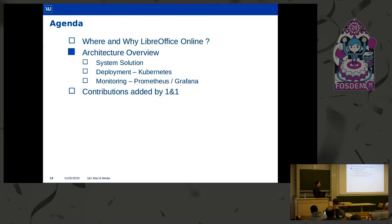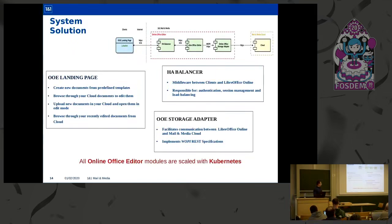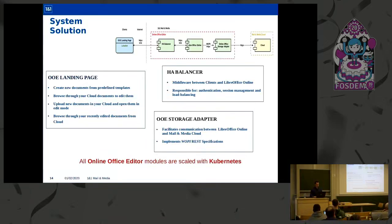Moving to the more technical part, we'll present the system solution of Online Office Editor, focusing on how we've deployed LibreOffice Online in Kubernetes, and how we can monitor LibreOffice Online instances in Kubernetes using Prometheus and Grafana. Online Office Editor is composed of high-level modules. We have the front-end component, which is the landing page custom component that allows users to create documents, quickly browse recently edited files, browse cloud documents for editing, or upload new documents.